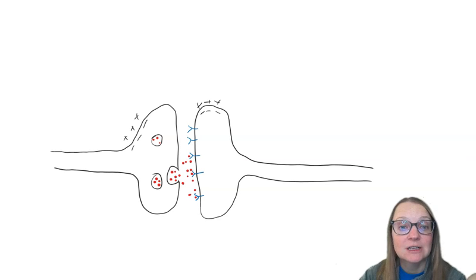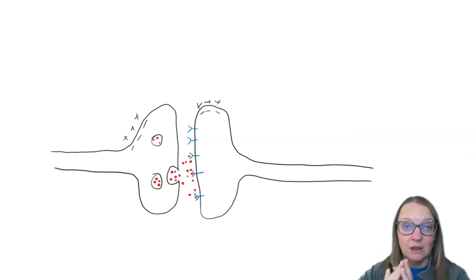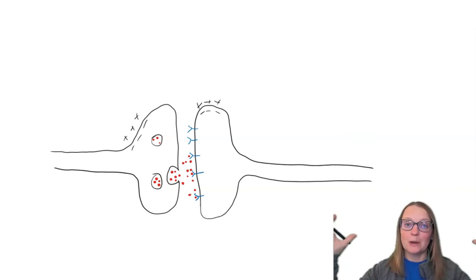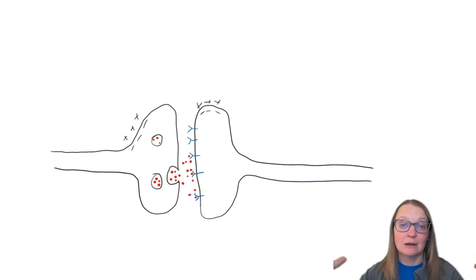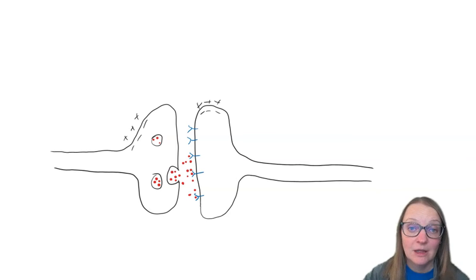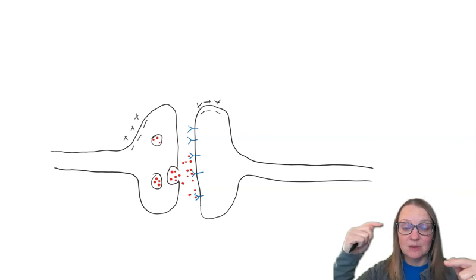So, once the neurotransmitter docks to that receptor, it causes the floodgates to open. And once the ion channel opens, that allows a whole bunch of those sodium ions, positively charged ions, to come rushing back into the cell. And that flips the membrane potential.